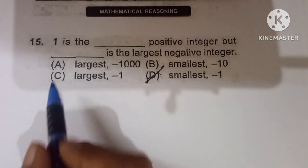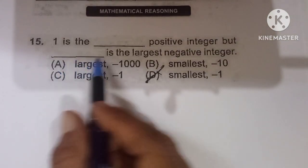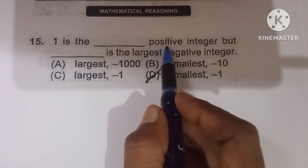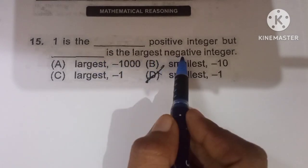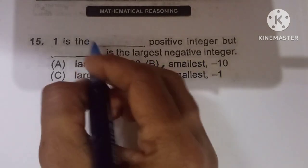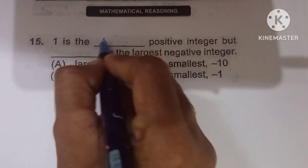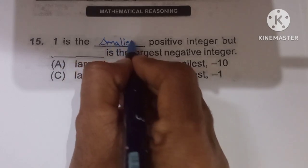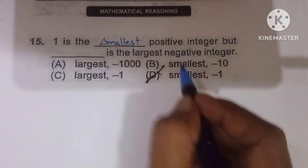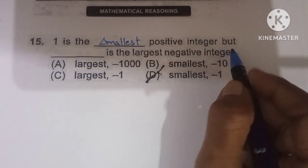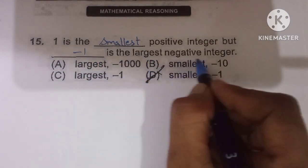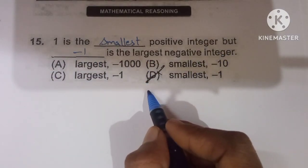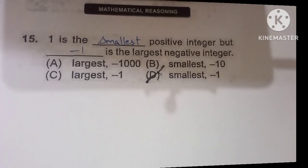Fifteenth question: 1 is the smallest positive integer but minus 1 is the largest negative integer. So option D is the correct one.